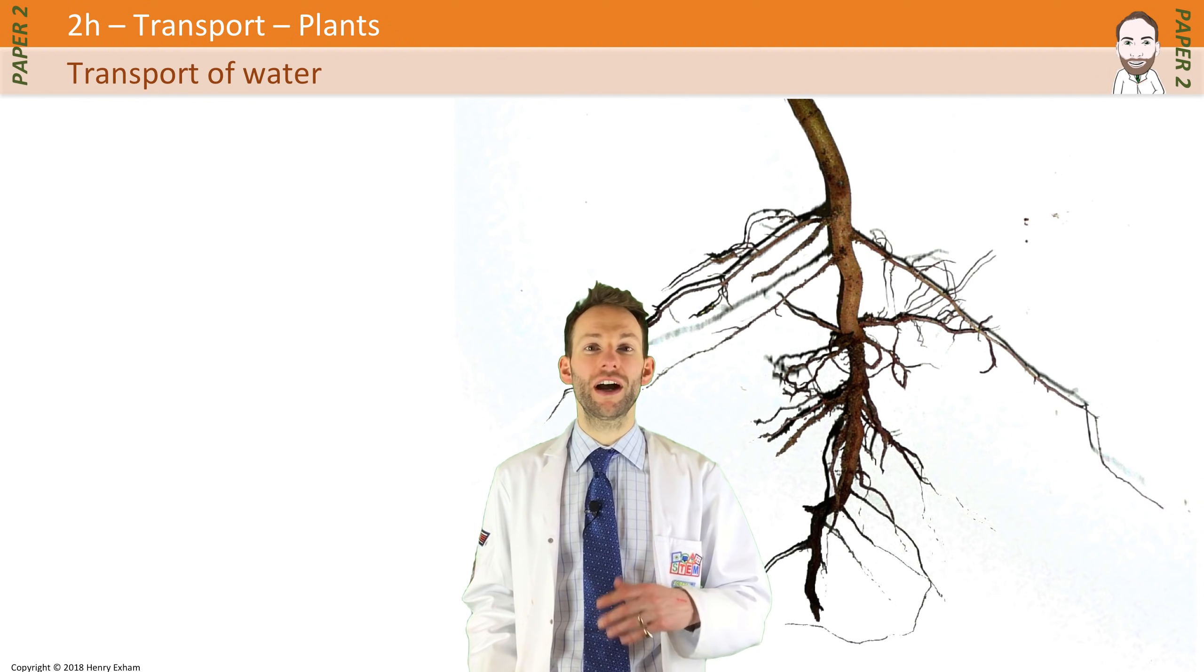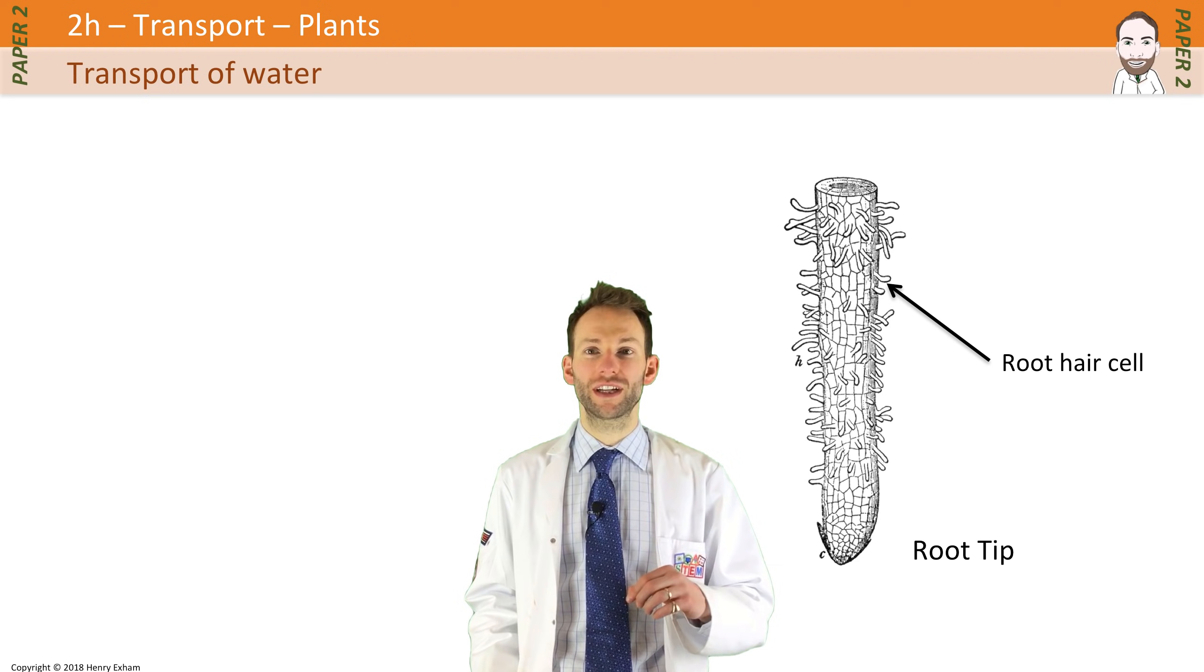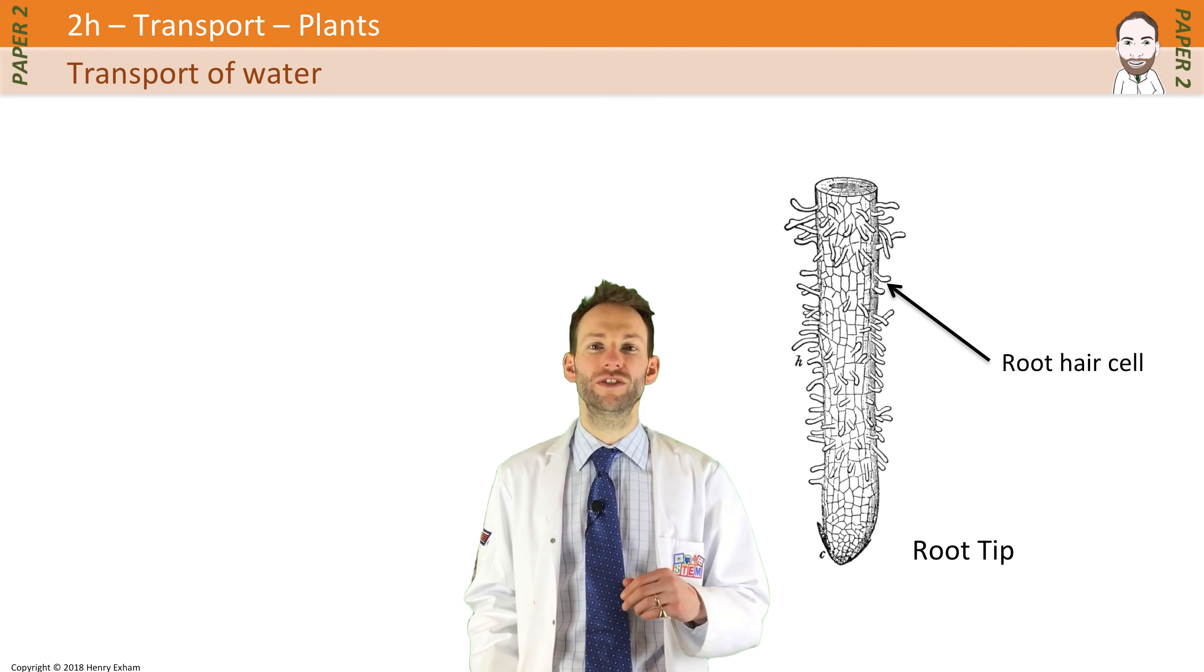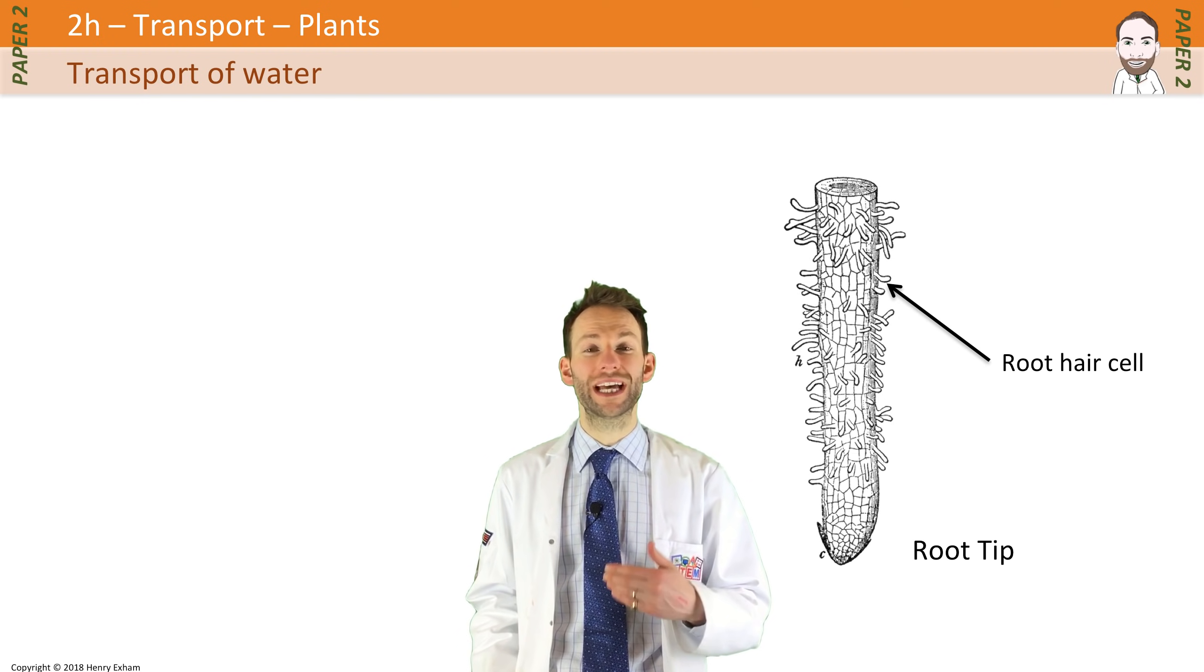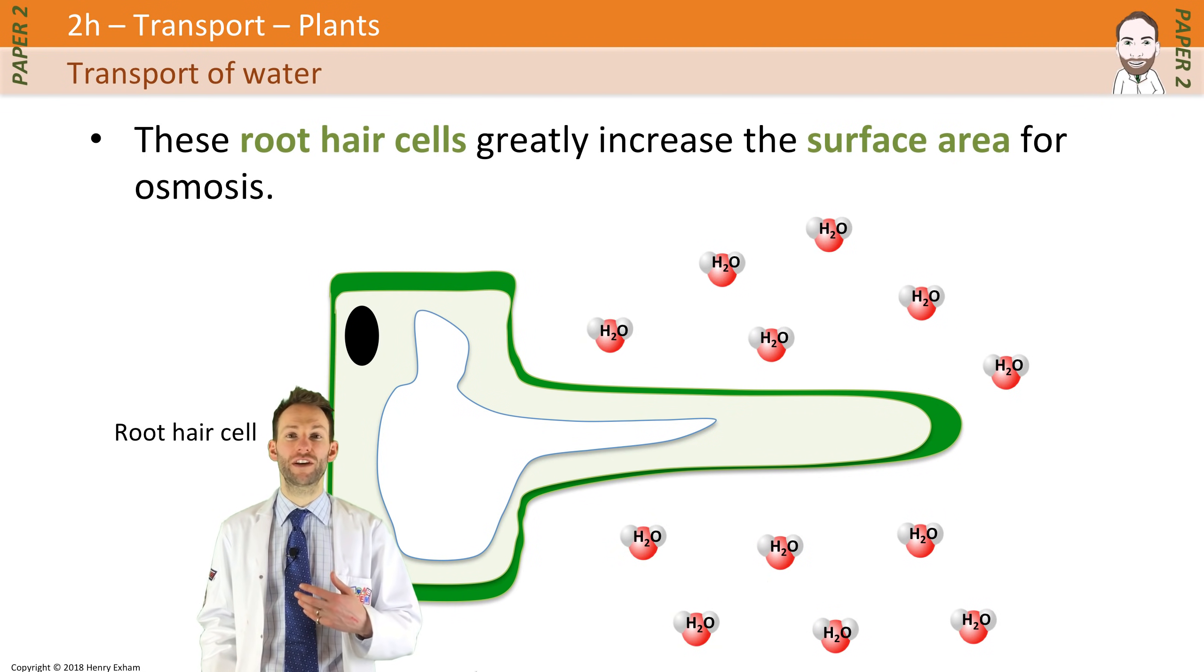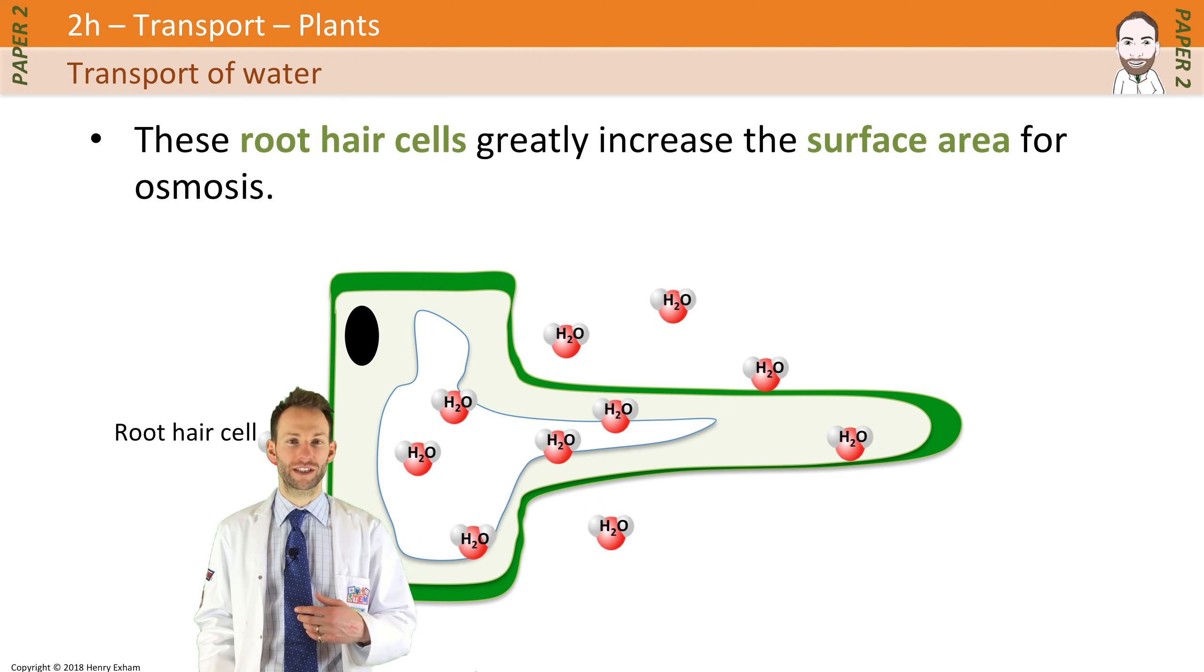The roots are highly adapted to this because the cells around the edge of the root have elongated extensions that stick out into the soil. These are specialized cells called root hair cells, and they provide a much larger surface area for osmosis to happen, so it increases the rate of osmosis.